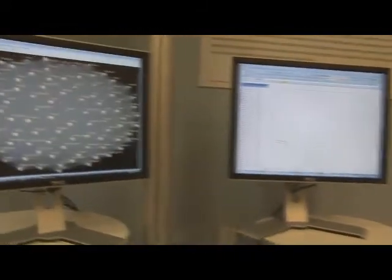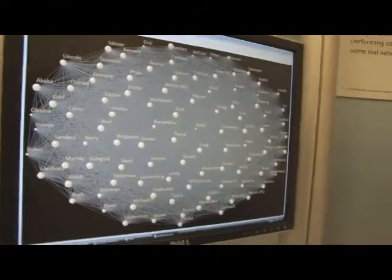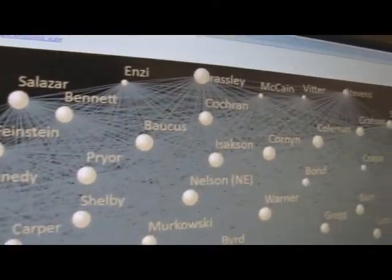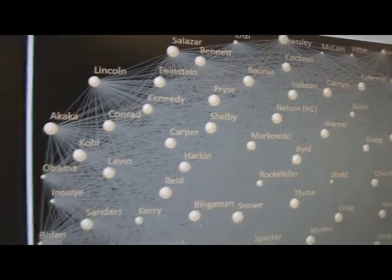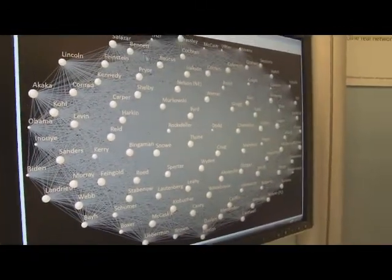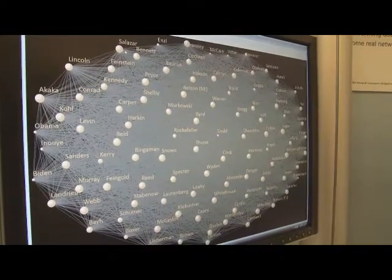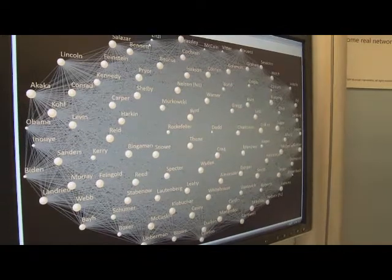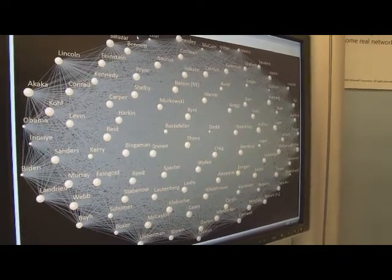I'll show you one example network we have imported into Excel. We have here a list of US senators and we have some information about their voting patterns back in 2007. We see each node here in the network represents one senator and the relationships here represent the percentage of agreement between their voting behavior in the Senate.